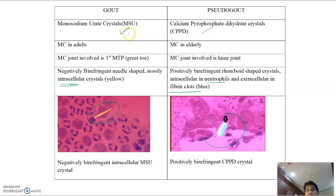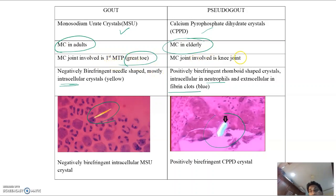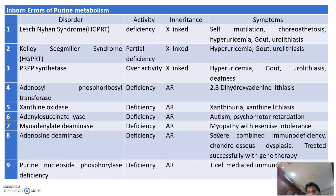Comparison — Gout: monosodium urate (MSU) crystals; mostly adults; most common joint: great toe; negatively birefringent, needle-shaped, mostly intracellular, yellow crystals. Pseudogout: CPPD crystals; mostly elderly; most common joint: knee; positively birefringent, rhomboid-shaped crystals, intracellular as well as extracellular in fibrin clots.